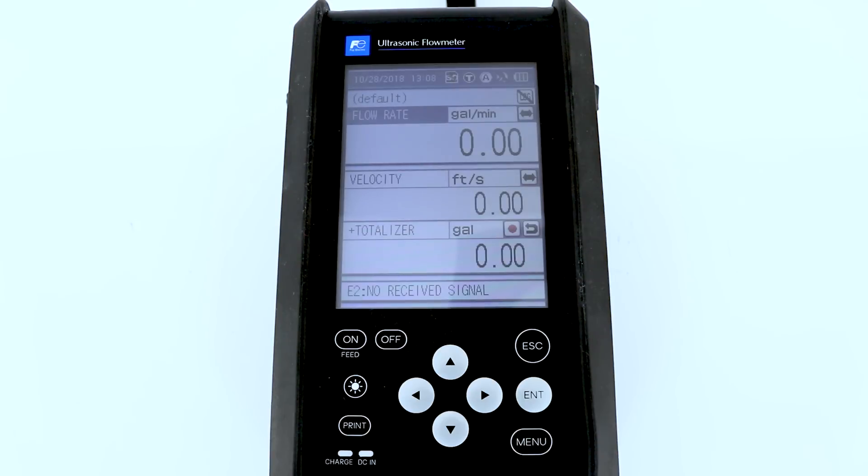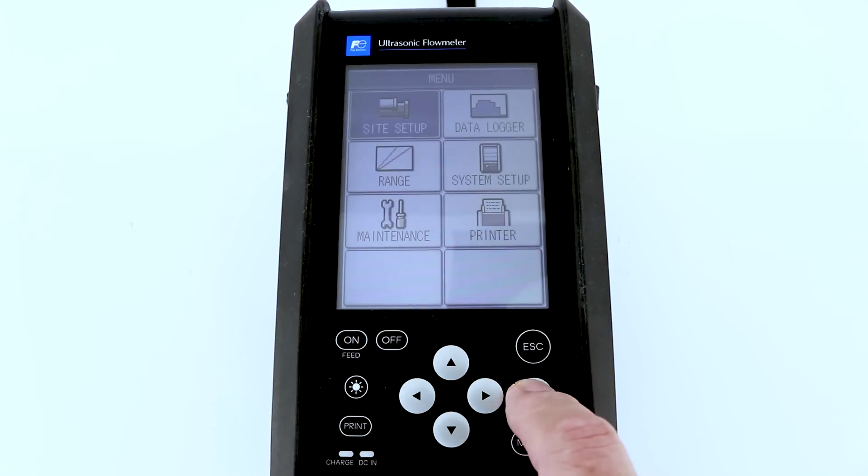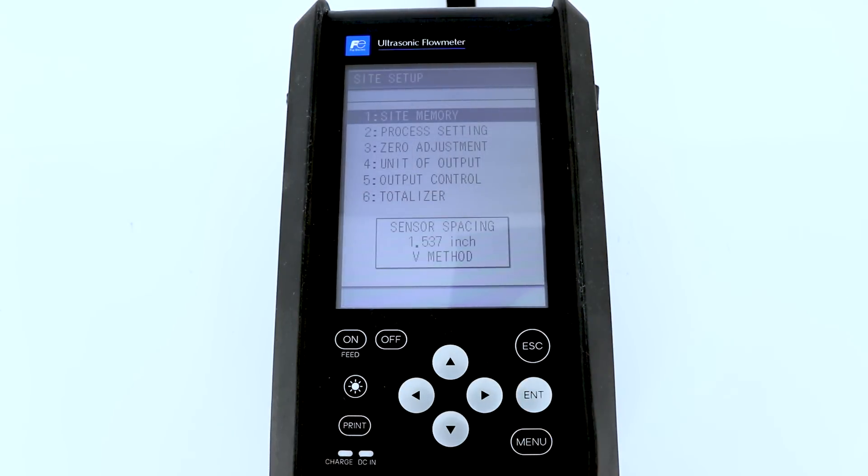After turning the flow meter on, this is the display screen which will indicate flow. Now we need to program your flow meter for your particular application. So first select menu, then we will select site setup, enter. We will select process setting with the down arrow, enter.